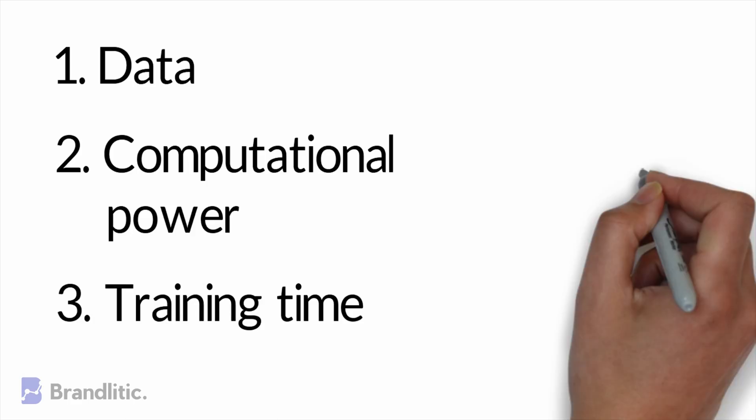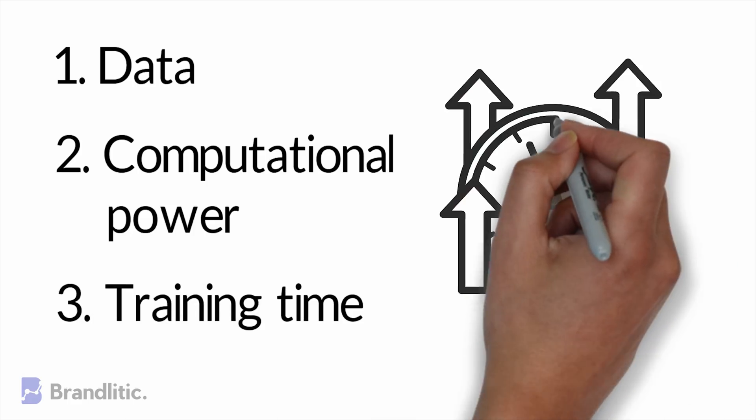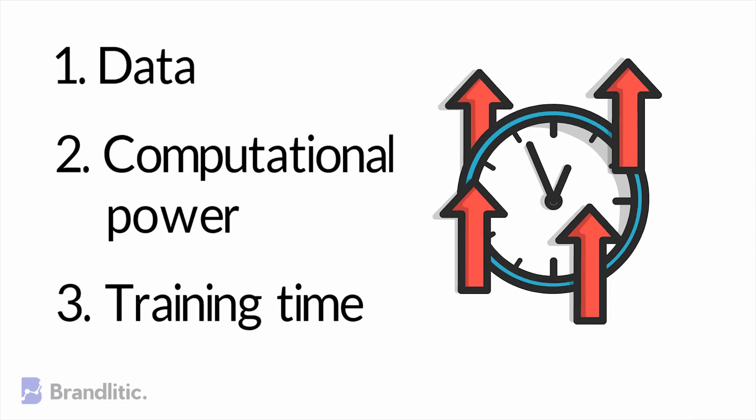3. Training Time - Training an average deep learning system can take weeks or even months to process and perfect. The training time is usually dependent on the amount of data and the number of layers in the hidden network.